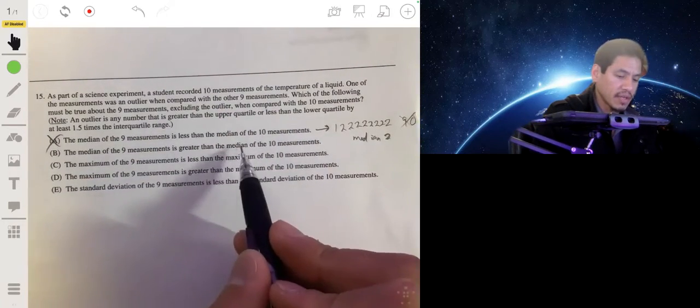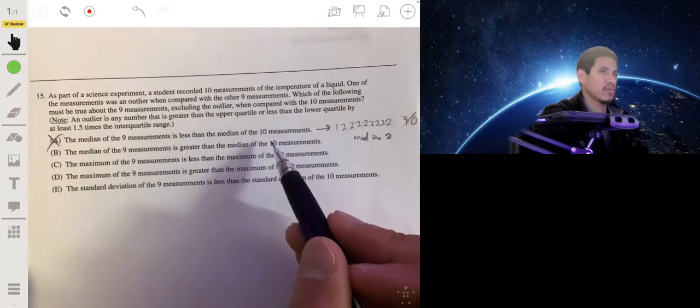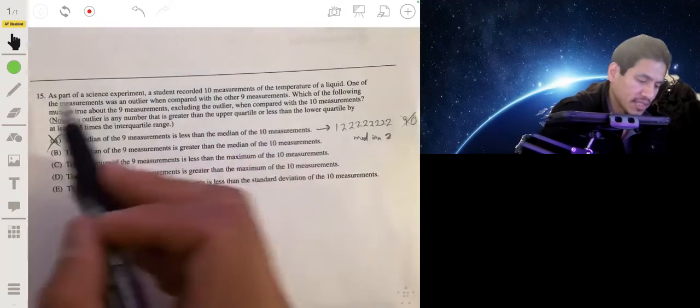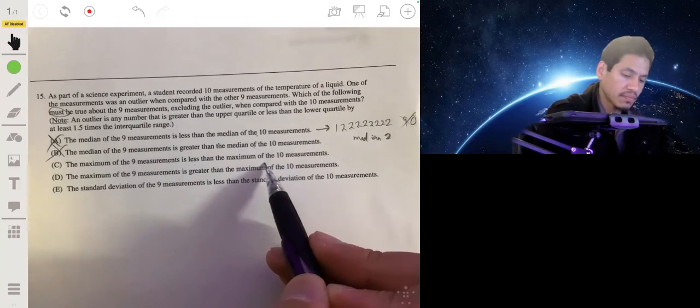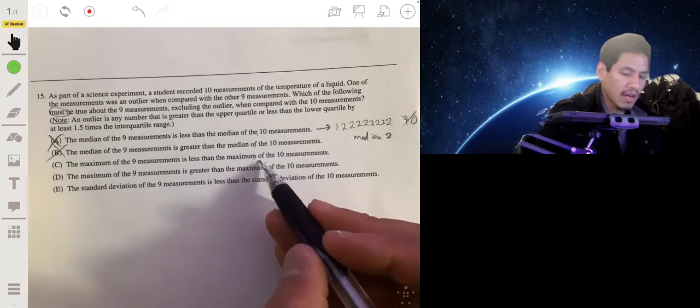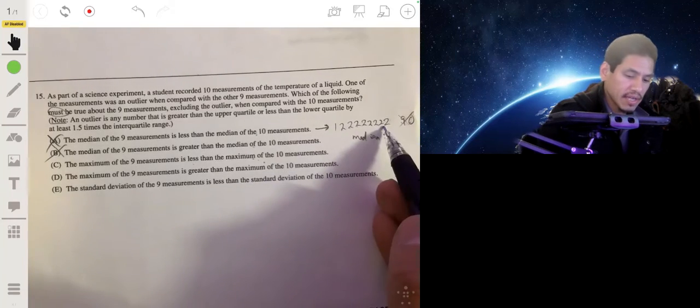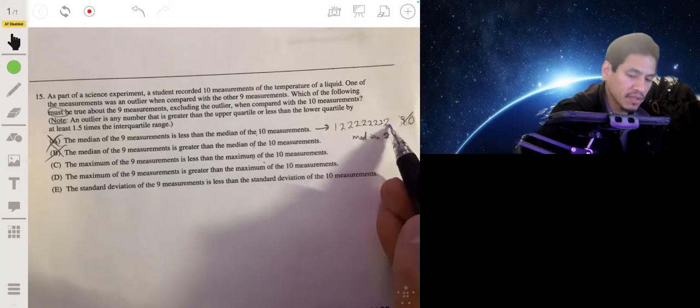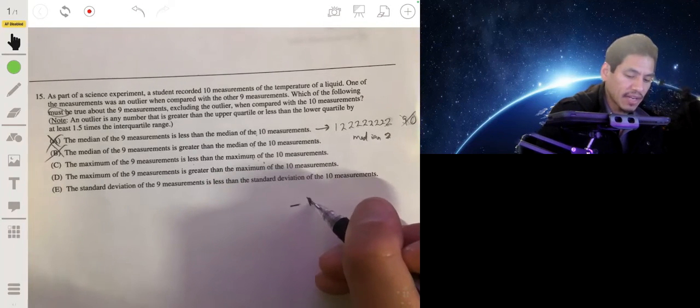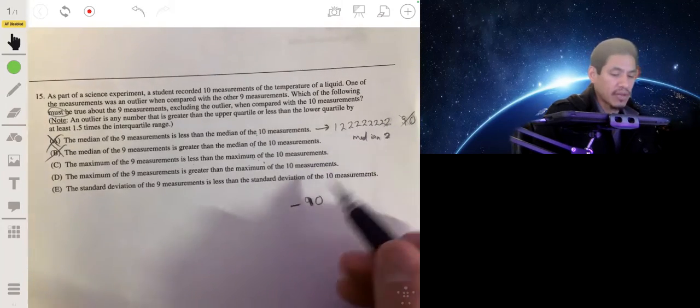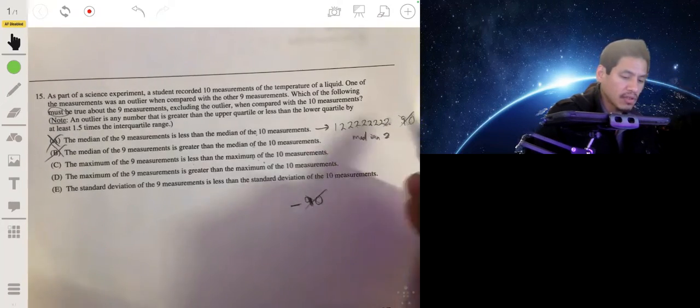The median of the nine measurements is greater than the median. Same idea. I'm just using an arbitrary example, because all you need to do is have one example to prove that it's wrong. So this says must be true. So this is not going to work either. The maximum of the nine measurements is less than the maximum of the 10 measurements. Well no, because the outlier could be on two. This is a good example. The outlier could be 90. So the maximum of these nine would be two. The maximum of the 10 would be 90. But what if you had the outlier as like negative 90? So then if we take away this outlier, you would still have all these values left, then the maximum would still be two. So then it wouldn't be less.